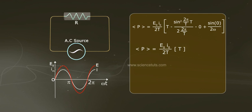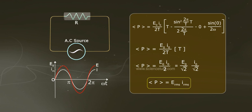P equals to E₀I₀ by 2 equals to E₀ by root 2 times I₀ by root 2. P equals to E_rms I_rms.